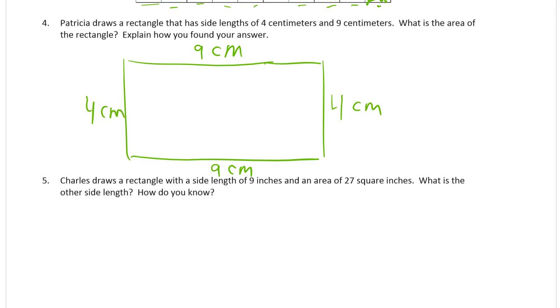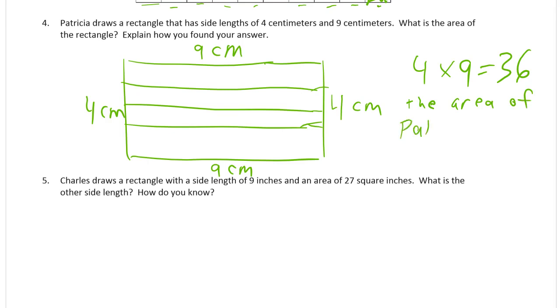What is the area of the rectangle? Well, you could draw squares in here and count the squares. You've got 4 rows of 9, but that would really be inefficient and you'd probably make a mistake in counting. You really don't want to have to count much more than 20 things because there's got to be an easier way. And there is—we're multiplying side lengths. So it's 4 rows of 9, which is 36. The area of Patricia's rectangle is 36 square centimeters.